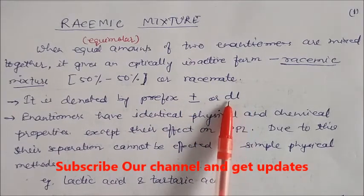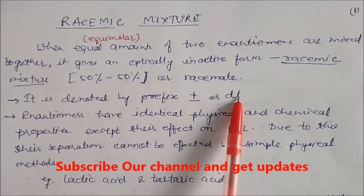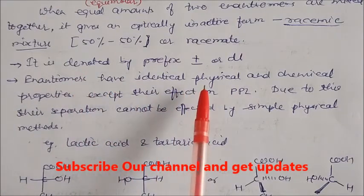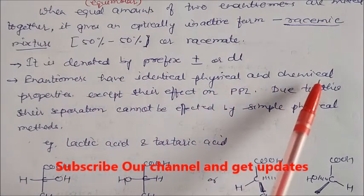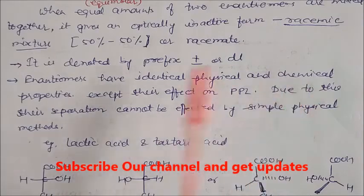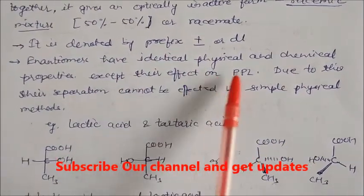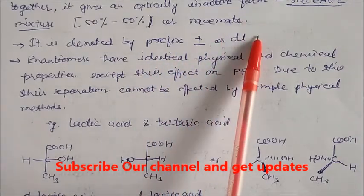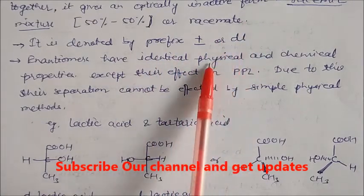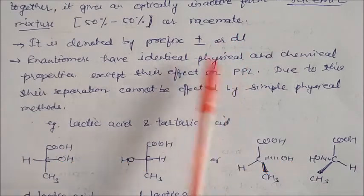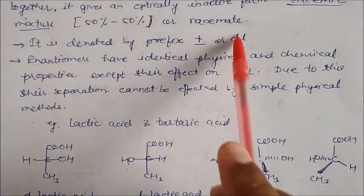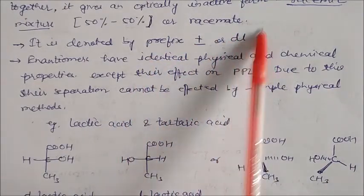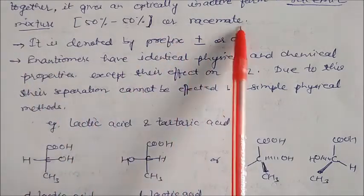Such a mixture is denoted by the prefix plus-minus or dl. We have already seen this is called dextro and this is called levo. These enantiomers in equal mixtures have physical and chemical properties that are identical, except their effect on plane polarized light. Plane polarized light only can differentiate them as d or l — if the molecule rotates to the right-hand side it is d, and if it rotates to the left-hand side it is l. So d and l are optically active, while if you take equal amounts in a mixture, it becomes optically inactive.